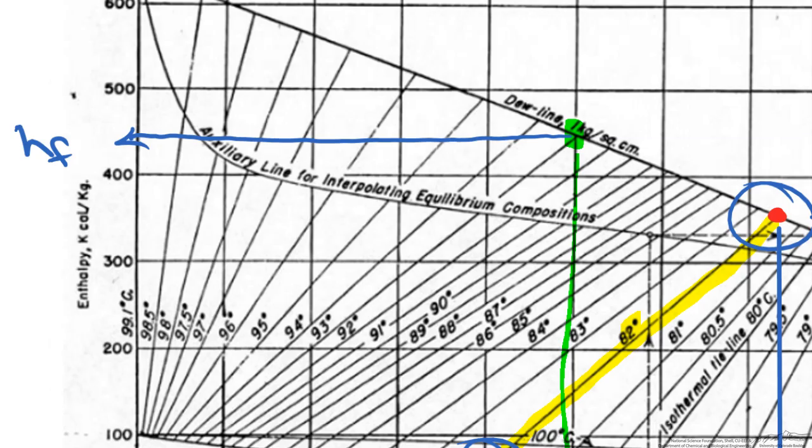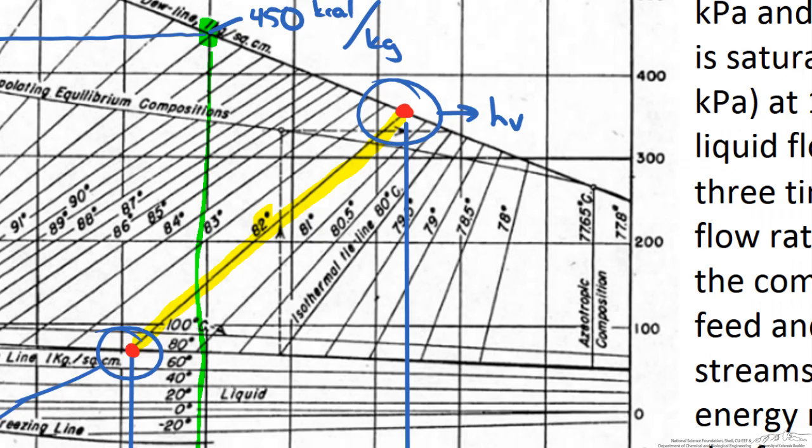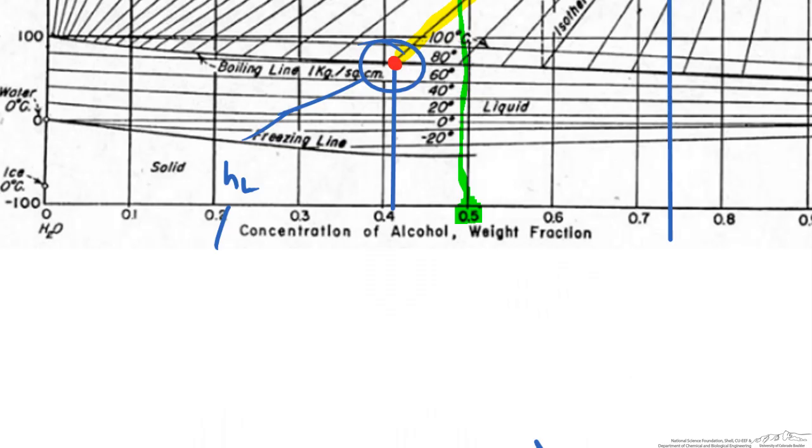So if I look at the feed stream first this is pretty close to 450 kcal per kg. If we look at our vapor stream when I get the ruler out I get about 357 kcal per kg. And I know that is a stretch but that is the best I can do reading off of this plot. And the enthalpy of our liquid stream again using a ruler I get about 67 kcal per kg.